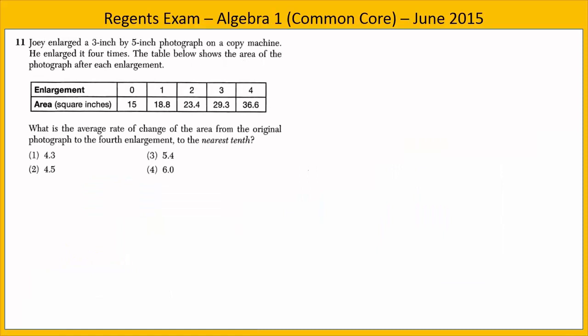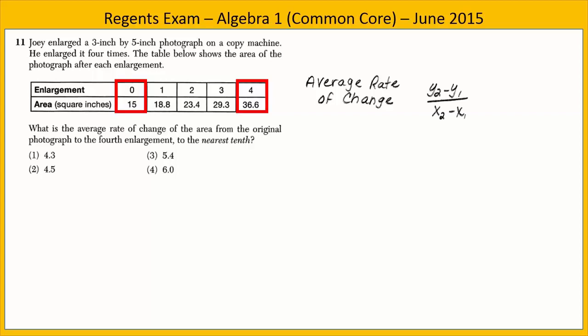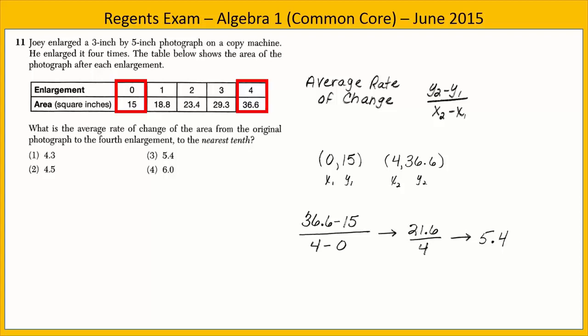In Exercise 11, Joey enlarged a 3 by 5 photograph on a copy machine four times, and the table shows the area after each enlargement. We want to know the average rate of change from the original photograph to the fourth enlargement. Average rate of change is the slope formula — y₂ minus y₁ over x₂ minus x₁. Identify those values in the table, substitute into the formula, and we find the average rate of change is 5.4. Choice 3 is our answer.